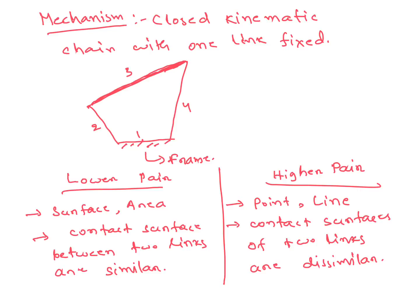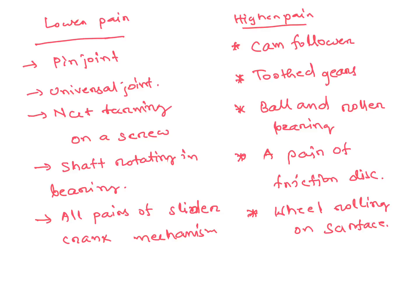Examples of lower pairs are: pin joint, universal joint, nut turning on a screw, shaft rotating in a bearing, and all pairs of a slider crank mechanism. All pairs in the slider crank mechanism are lower pairs — this question is asked in IS exams.